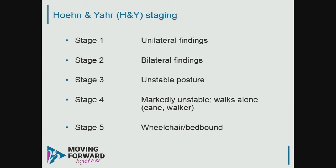The Hoehn and Yahr staging system was devised in the 1960s. Stage 1: unilateral findings only. Stage 2: findings on both sides but balance preserved — though severity can vary widely within this stage. For additional detail, the UPDRS, or Unified Parkinson's Disease Rating Scale, scores each activity and totals up to around 170 points. Someone can be at a mild stage 2 with slight symptoms, or a severe stage 2 with significant shaking and stiffness but preserved balance — both are stage 2 but obviously not at the same disease state.